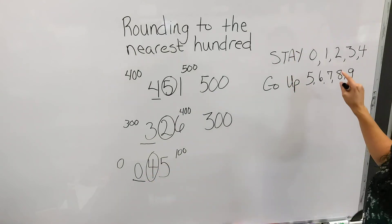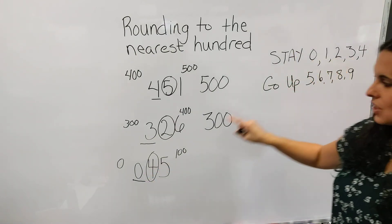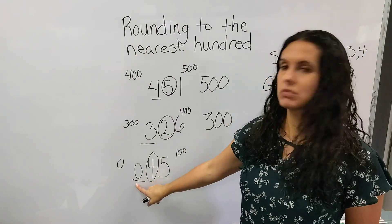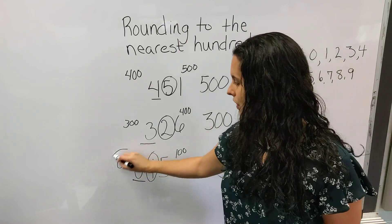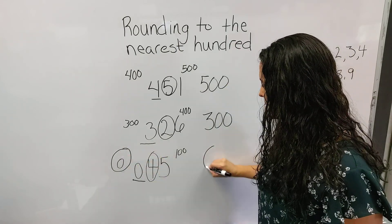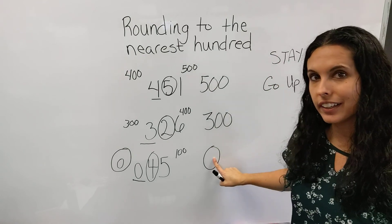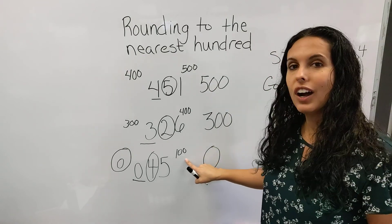Now 4 says stay. So it's going to tell the zero, stay a zero. So 45 is closer to zero on the number line than it is to 100.